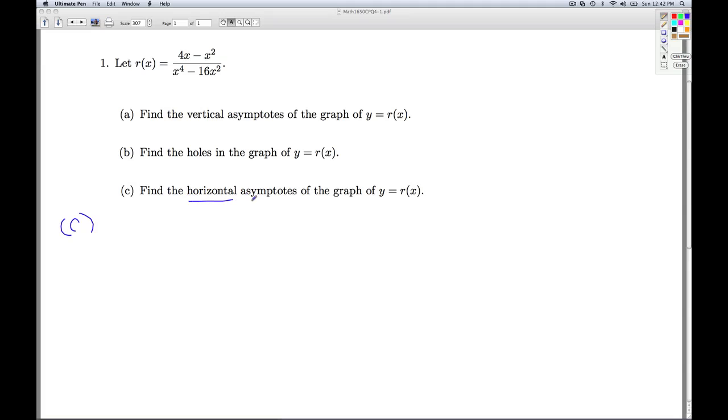Alright, in part C, we're asked to find the horizontal asymptotes of the graph y equals r of x. As we mentioned in class, it turns out with rational functions, if you get a horizontal asymptote, you only get 1. We do have a theorem in 4.1 about where the horizontal asymptotes are going to be. We look at the degree of the numerator and the degree of the denominator. If I look at the highest power of x in the numerator, it's x squared. And the highest power of x in the denominator is x to the fourth. Since the denominator has the higher power of x, the higher degree, we know that y equals 0 is going to be a horizontal asymptote. So since the degree of the numerator, which in this case is 2, is less than the degree of the denominator, in this case 4, we have a horizontal asymptote y equals 0.